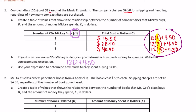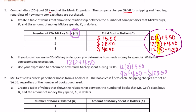Part C: Use your expression to determine how much Mickey spent buying eight CDs. We'd do 12 times eight, plus $4.50 to have them shipped. 12 times eight is $96, plus $4.50 would be equal to $100.50 for eight CDs.